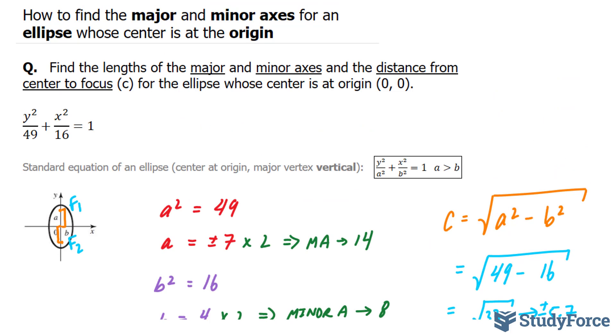And there you have it. That is how to find the major and minor axes for an ellipse whose center is at the origin.